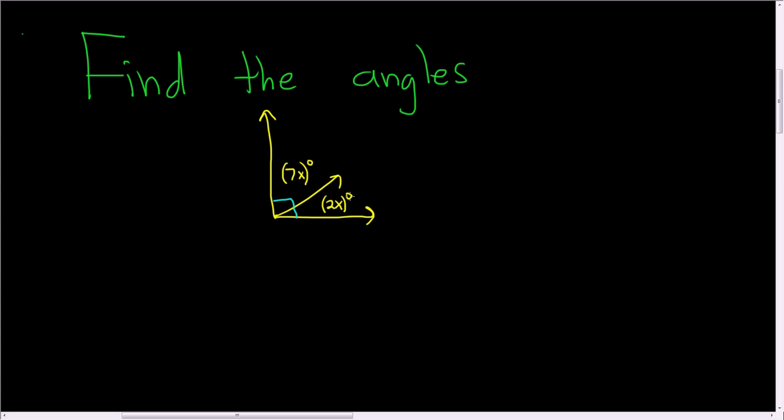We have our first angle that's 2x and our second angle is 7x. Complementary angles are angles whose sum is 90 degrees. So all we have to do is add. 2x plus 7x, that should be equal to 90.